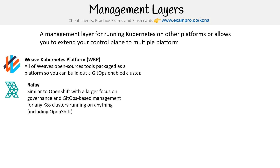Then there is Rafay — no idea if that's the correct pronunciation — but it's similar to OpenShift, which we'll talk about in a moment. It has a larger focus on governance and GitOps-based management for any Kubernetes clusters running on anything, including OpenShift. When you go to the Rafay website, they show that they can manage anything from anywhere. The idea is if you buy into their system, you just need to learn one interface, which could be very attractive.